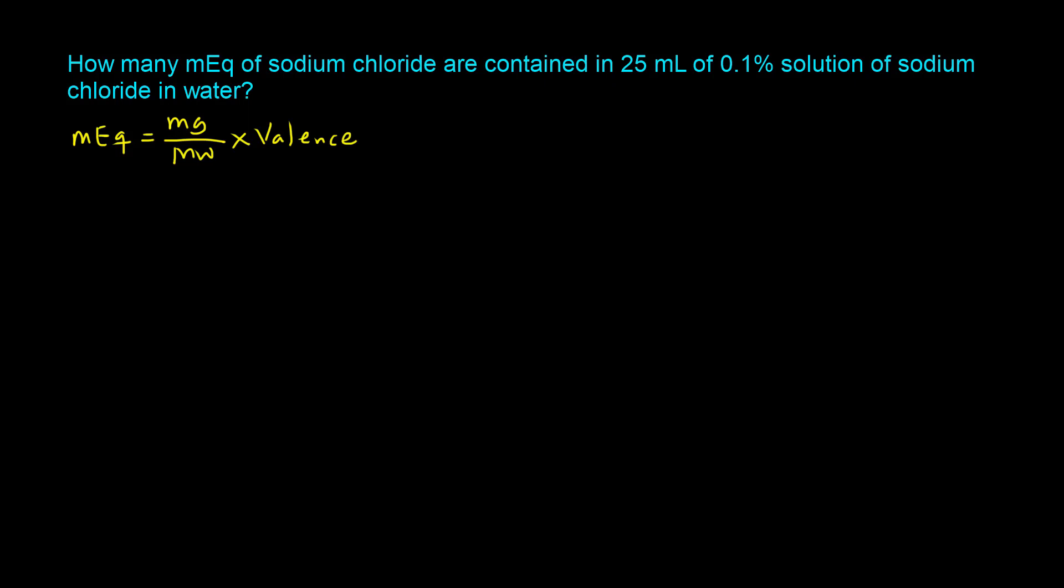The first thing we can do is determine what the valence is going to be. We have sodium chloride, which is NaCl. When you put that in an aqueous environment it's going to dissociate into a sodium cation and a chloride anion.